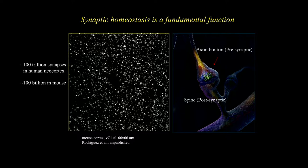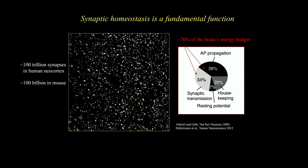We have many synapses in the brain. Almost all of what I'm going to tell you about refers to the excitatory glutamatergic synapses that are the majority — 80% or so — of all synapses in the brain. That's what I'm going to tell you about: the presynaptic component, the axon bouton, and this protrusion of the dendritic shaft that is the spine. Synaptic activity accounts for the bulk of the brain's energy budget — at least 60 to 80% of the total energy used.